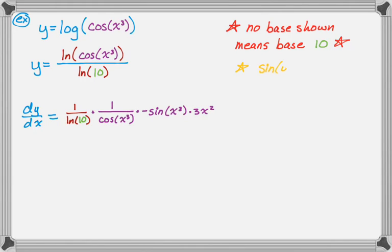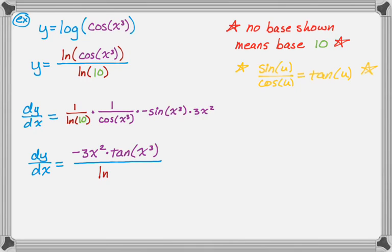And now we can clean this up a lot, actually, because if you remember sine of u over cosine of u is equal to the tangent of u, so this will look a lot simpler when we're done. And since there's two things in the denominator, I'm going to write it as you'll see. So I'm going to have negative 3x squared and then tan of x cubed because of the sine of x cubed over the cosine of x cubed.